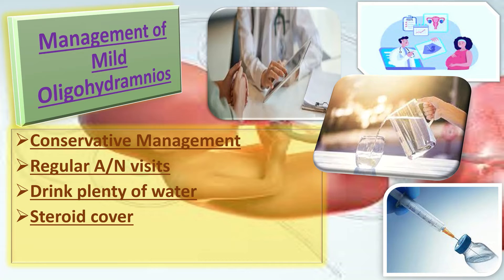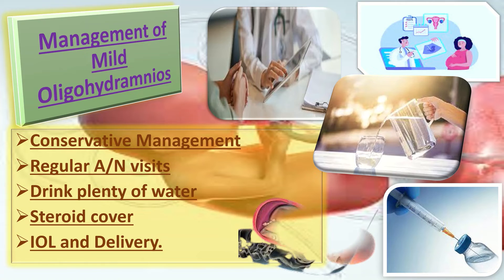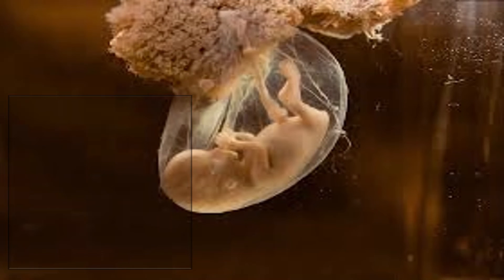In the presence of complications, we will consider early delivery. In the absence of any added complications, the pregnancy would be taken to term and induction of labor would be planned at 38 weeks to prevent unexplained intrauterine death after 38 weeks. This is how we manage a case of mild oligohydramnios.